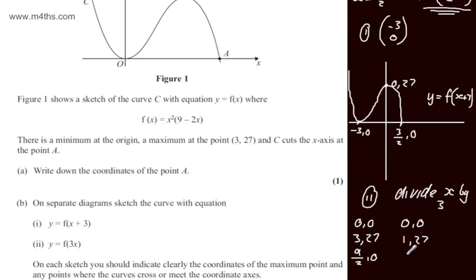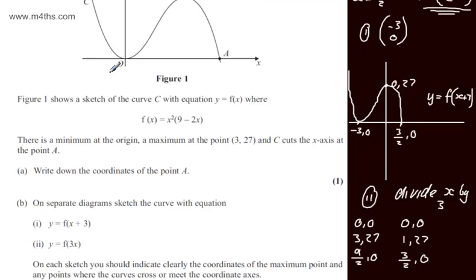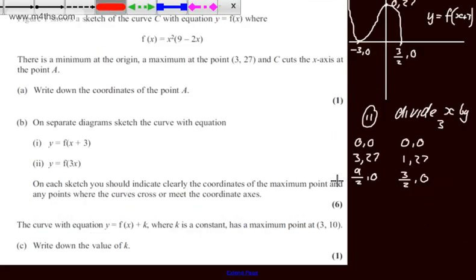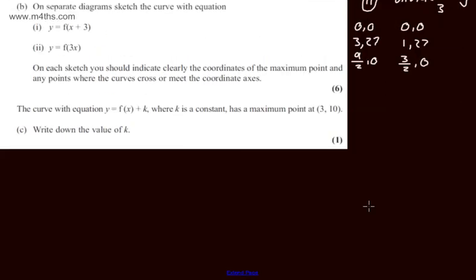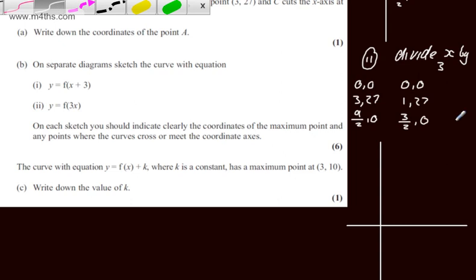This will become 1 comma 27. And this now, dividing this one by 3, we're going to have 3 over 2 comma 0. We need to show that this is now being squashed towards the y axis. So a quick sketch now, just drawing it down here. I've stated that this now is a scale factor stretch of 1 third in the x direction, which I'll put just here. SF, 1 third in x.